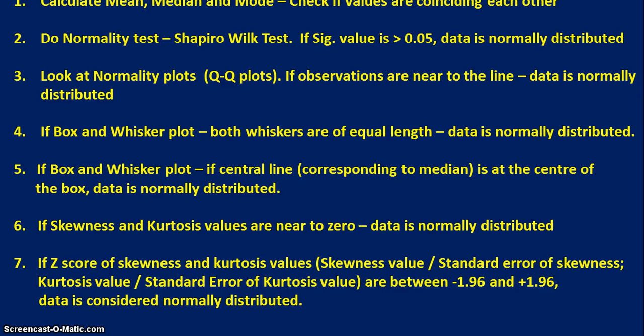If the significance value is more than 0.05, the data is normally distributed. The third method is to look at normality plots like QQ plots. If all the observations are near to the diagonal line, the data is normally distributed.